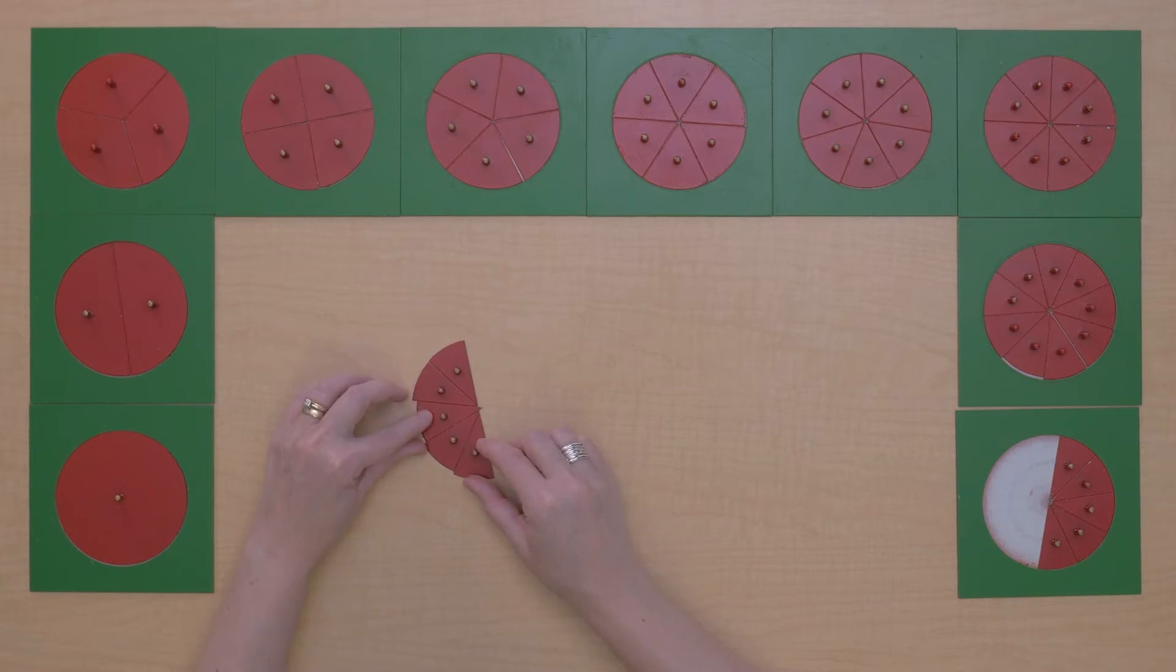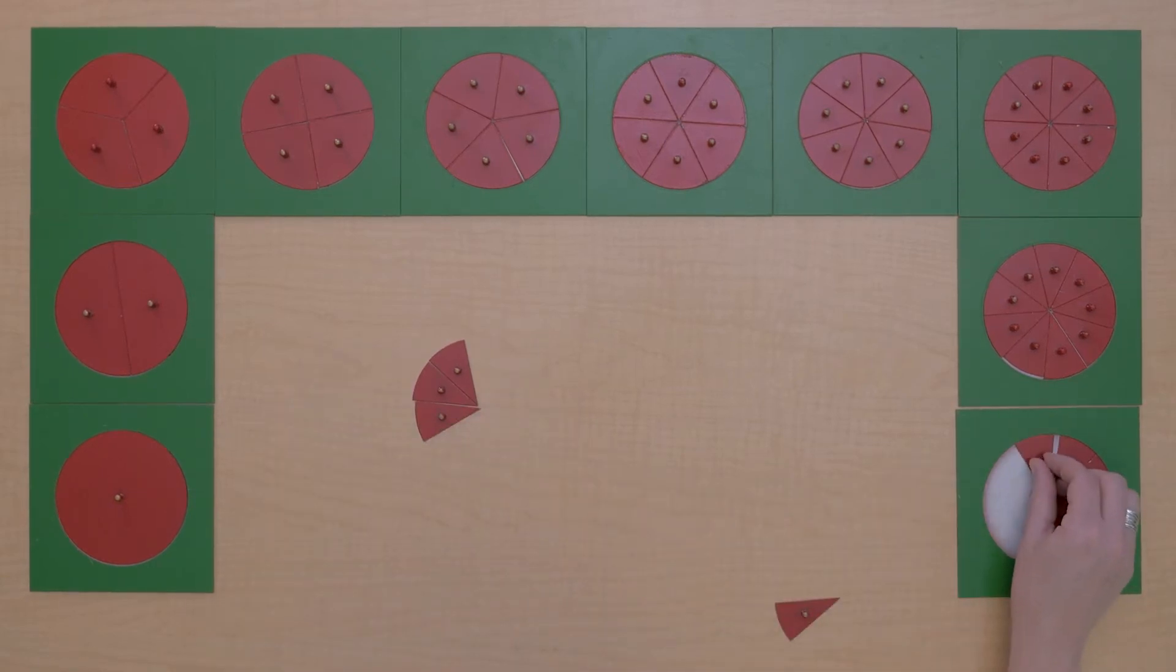And now we can subtract our 2 tenths. And what do we have left? 3 tenths. Let's write what we did.